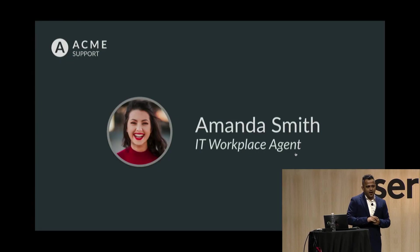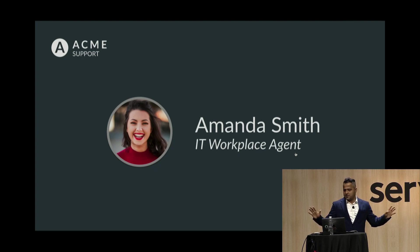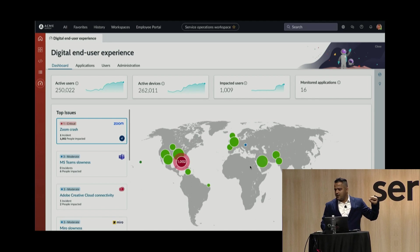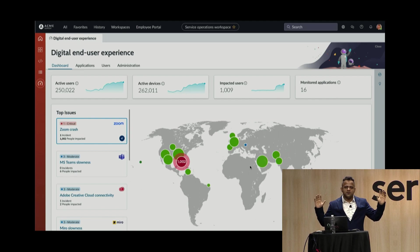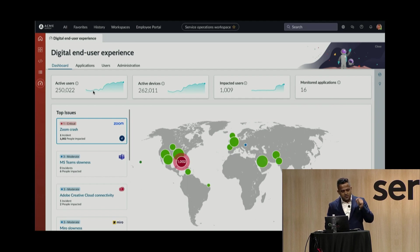Now let's look at Amanda Smith, an IT workplace agent responsible for managing and maintaining all end user devices. She starts her day by going to the Digital End User Experience console inside Service Operations Workspace — it's a cockpit giving her visibility across the globe and across locations. She can see active users, active devices — 250,000 users, 260,000 devices — and she notices a Zoom crash happening in a particular region.